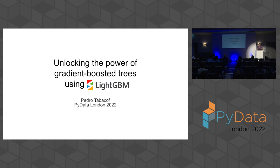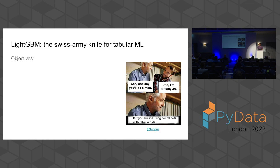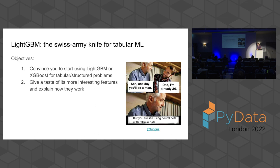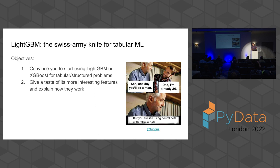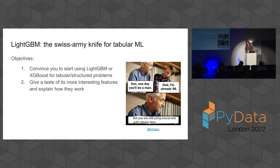So let's start by dissing neural networks first. I'm not here to show you memes. My objectives are actually twofold. First, I want to convince you to start using LightGBM or XGBoost for tabular problems, if you're not using them already. And second, if you're using them, I want to give a taste of some interesting features. And I want to also explain roughly how they work.